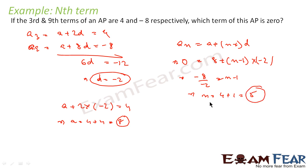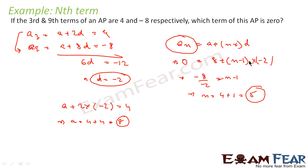So the 5th term of the AP is 0. To summarize: we used a3 and a9 to form two linear equations, found a equals 8 and d equals minus 2. Once we know a and d, we set an equal to 0 and used the formula an equals a plus (n minus 1)d. The value of n came out to be 5.